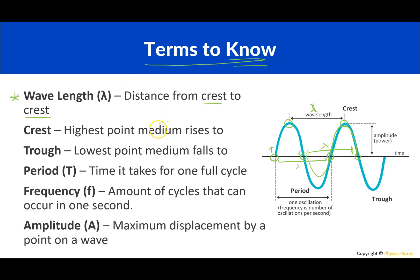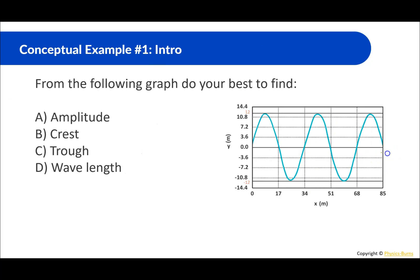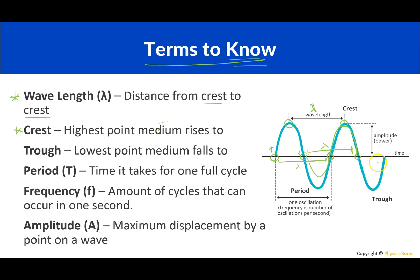Okay the crest is the highest point the medium rises. So the crest is going to be a lot of times going to be the same as the amplitude but the crest is going to be the positive of the amplitude. So from here to here that's the crest. From here to here that's the crest. Okay and the trough is the lowest point of the medium falls. So this is like the negative side of the amplitude from here to here. Here to here. That's the trough.